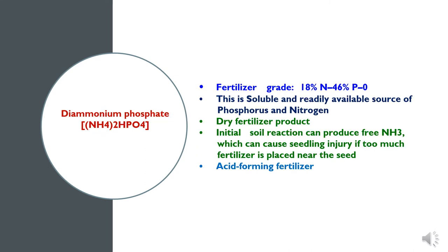Another water soluble Phosphatic fertilizer is DAP — Diammonium Phosphate — which is a widely used phosphatic fertilizer. It is a dry fertilizer product, soluble and readily available source of Phosphorus and Nitrogen. DAP contains 46% Phosphorus as P2O5 and 18% Nitrogen content. The Nitrogen is present in ammoniacal form, so in the initial soil reaction free ammonia gas is produced, which may cause seedling injury. Therefore, the fertilizer should be placed away from the seed.